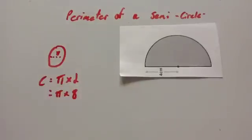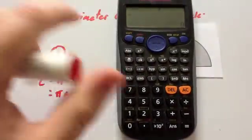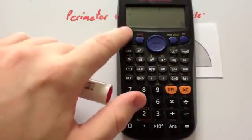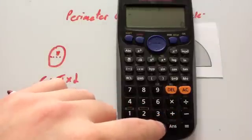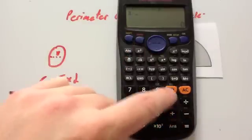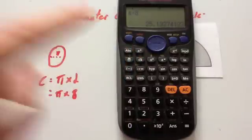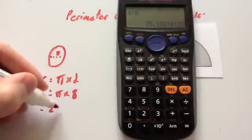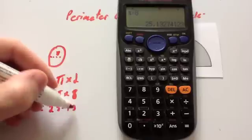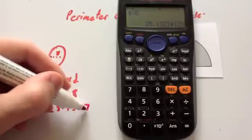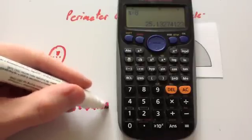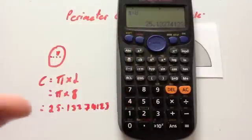So get your scientific calculator. Remember the pi button's here, so you're going to press shift and you're going to press this button to get pi, times 8. Press equals, and you get the circumference of the whole circle, which in this case is 25.13274123. Don't round this answer because you're not finished the sum yet.